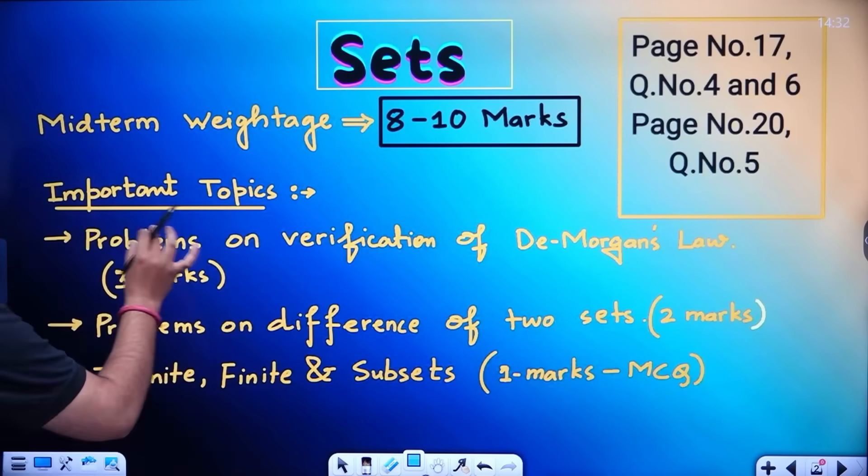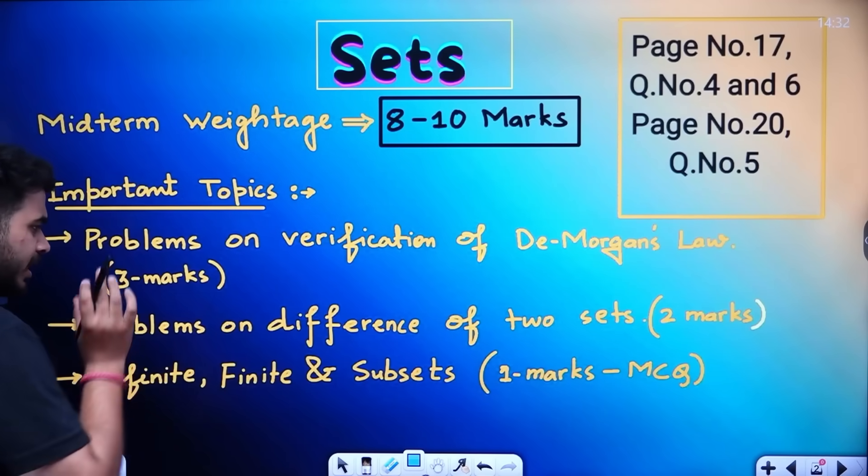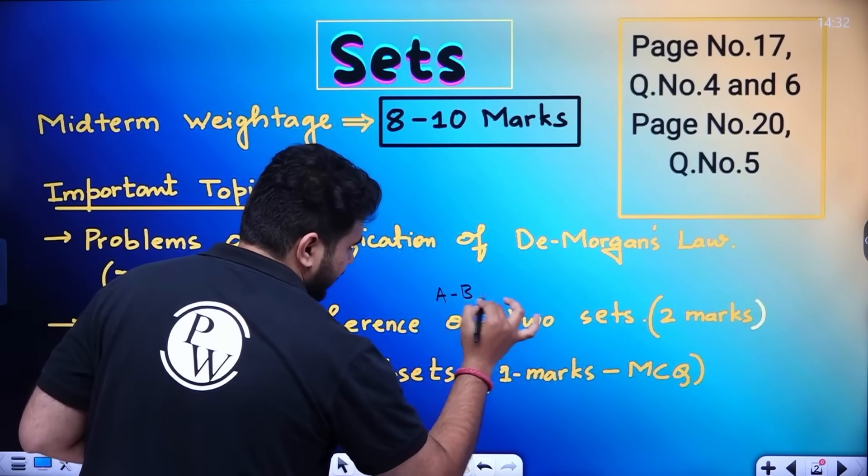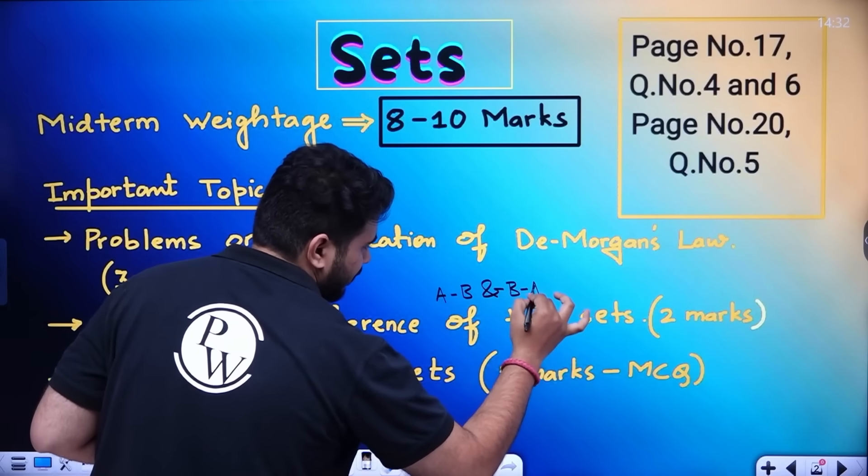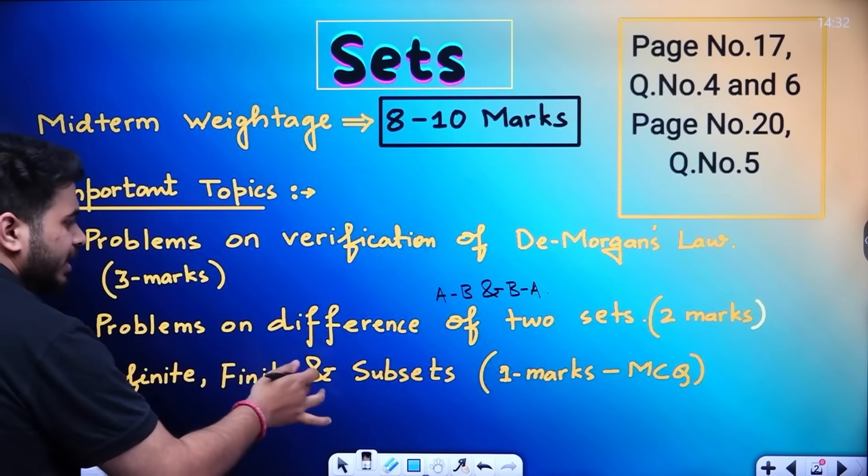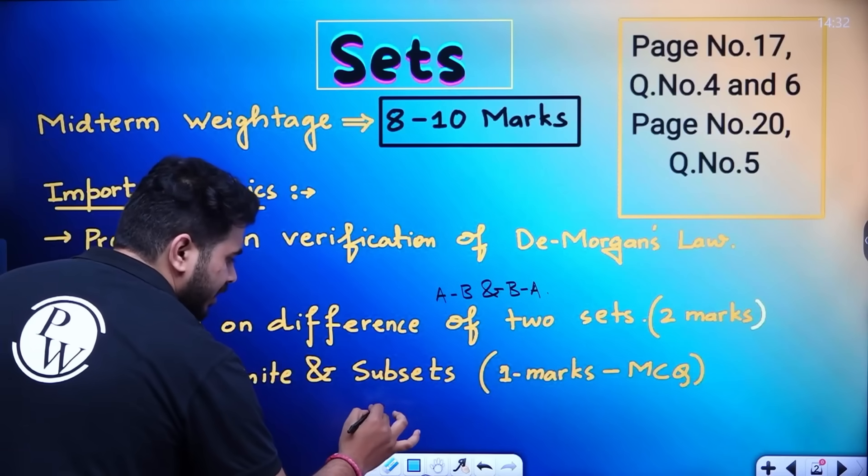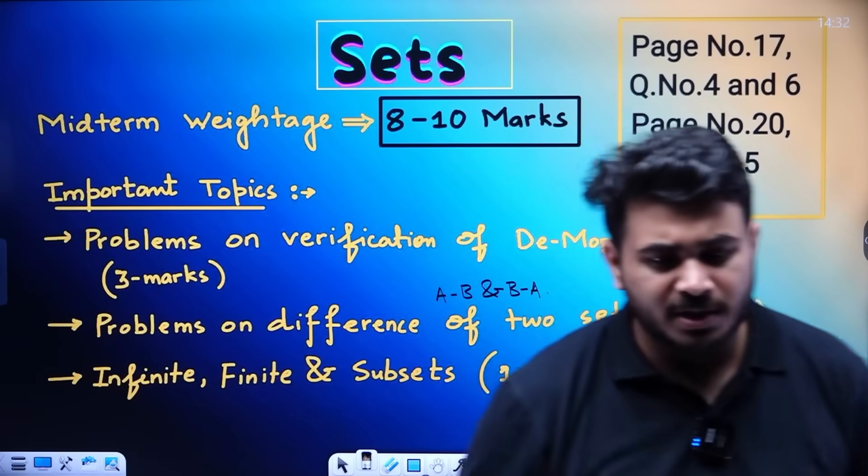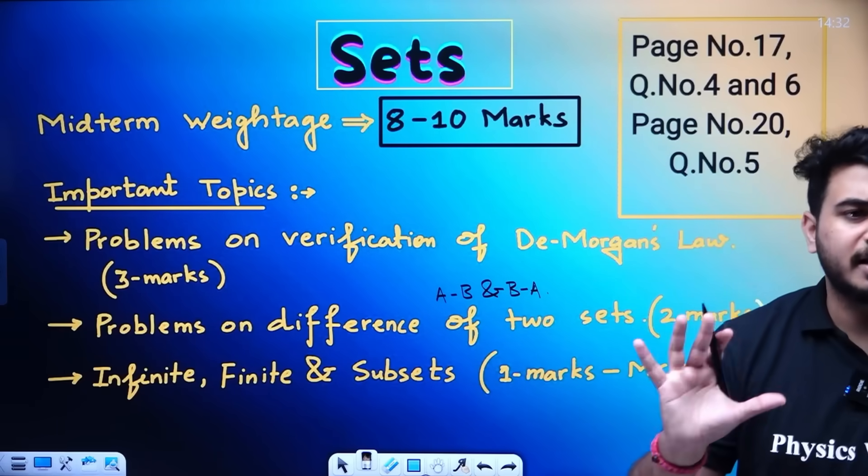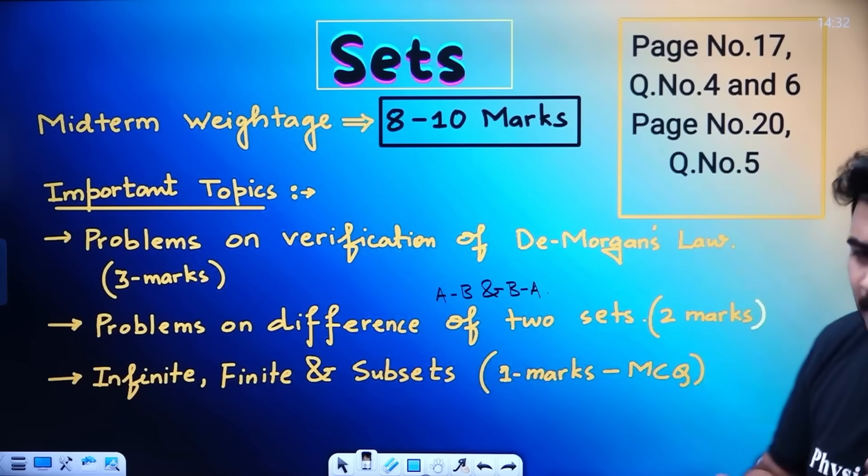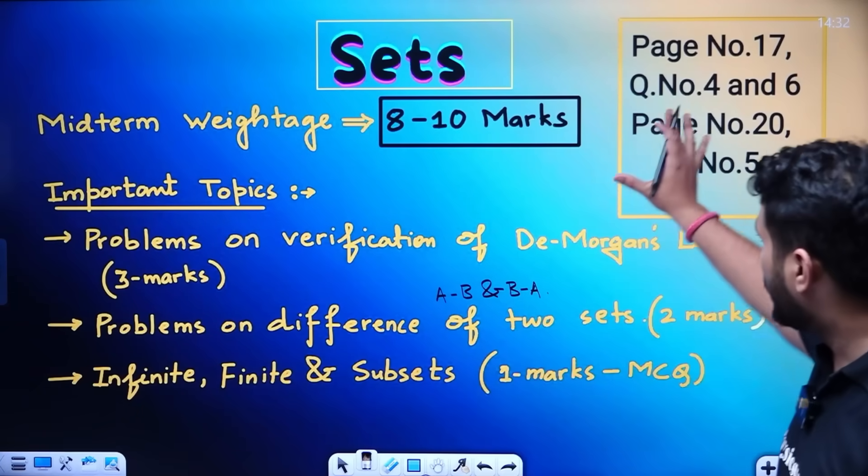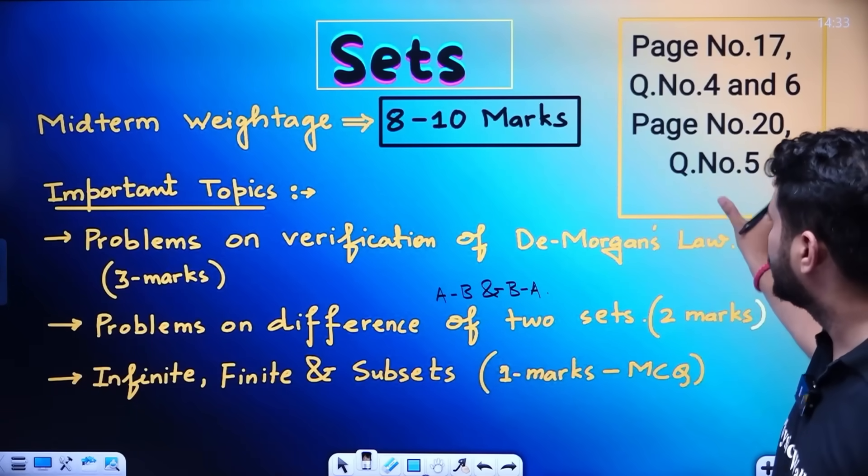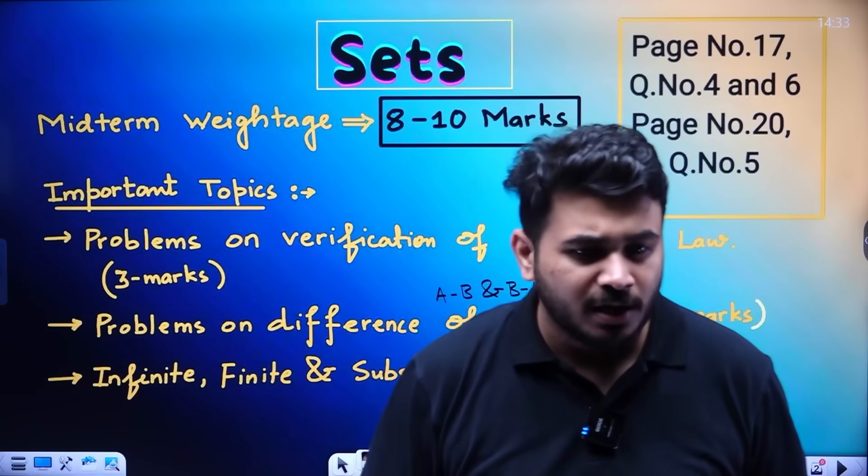Important topics, problems on verification of De Morgan's law, 3 marks, 1 question. Problems on symmetric difference of 2 sets, that is you need to find A minus B and B minus A. 2 marks, 1 problem you will get. And infinite, finite and subsets, number of subsets, formula, it is 2 to the power of n. n number of elements are there, number of subsets will be 2 power of n. Now, if you want important questions, page number 17 only, question number 4 and 6 are very important. And page number 20 only, question number 5. This is according to your new NCERT textbook.